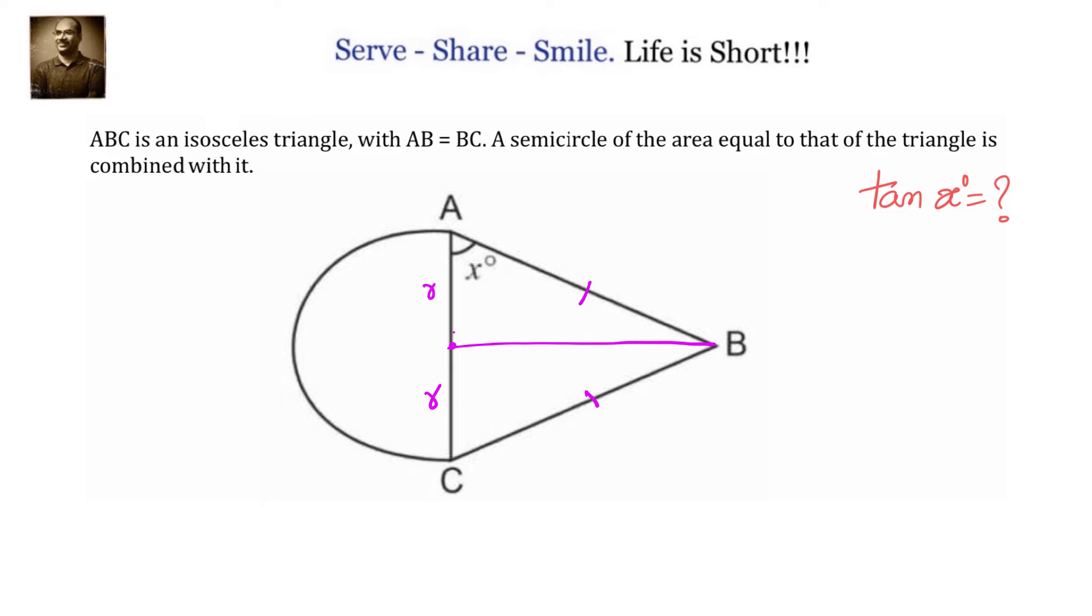What will be the area of the semicircle? Let us calculate that first. We know area of semicircle is half of the area of the circle. If r is the radius of the circle, then area of the semicircle will be half pi r squared.